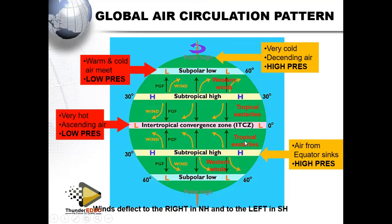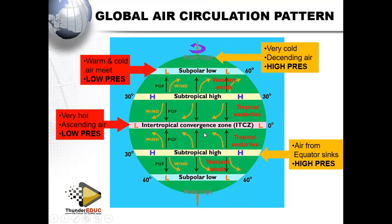If you forget the deflection rule, draw the letter S here. When you draw the letter S and cross the equator going down, note that the low pressure in the northern hemisphere is rotating anticlockwise. When you cross the equator coming to the southern hemisphere as you complete the S, it starts rotating clockwise. So the low pressure in the southern hemisphere rotates clockwise.